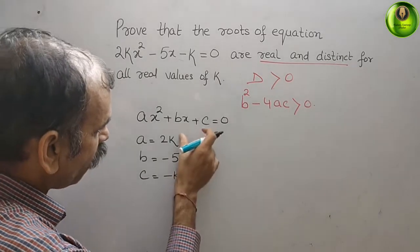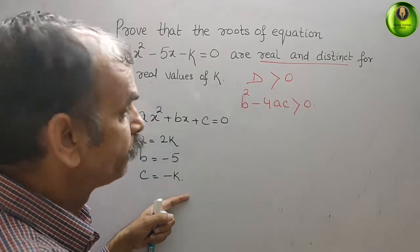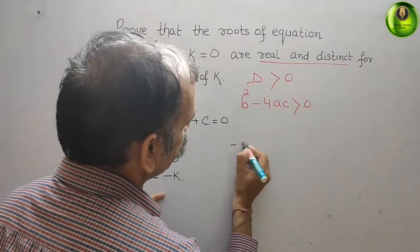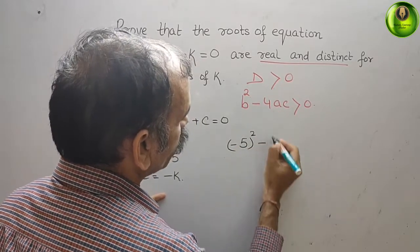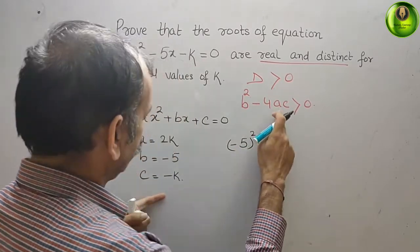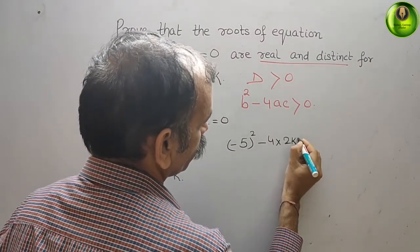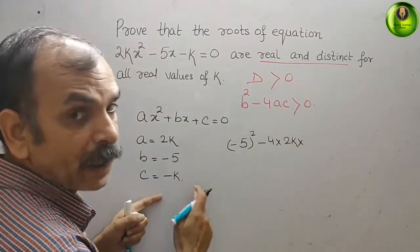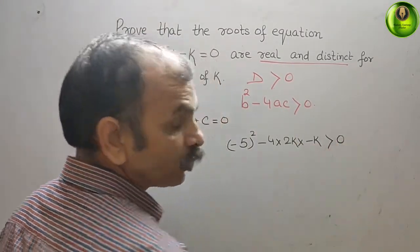Now, substitute all these three values in your discriminant. What you will get? b², that means (-5)². Minus 4 into a, a is 2k, into c, c is -k. It should be greater than or equal to 0.